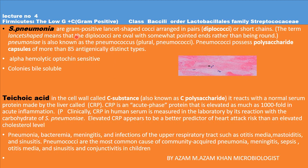Now we discuss Streptococcus pneumoniae in detail. It is gram-positive and lancet-shaped, arranged in pairs — meaning it is a diplococcus. After gram staining you observe Streptococcus pneumoniae in diplococci form. 'Lancet-shaped' means the diplococci are somewhat pointed at the ends, not perfectly round.